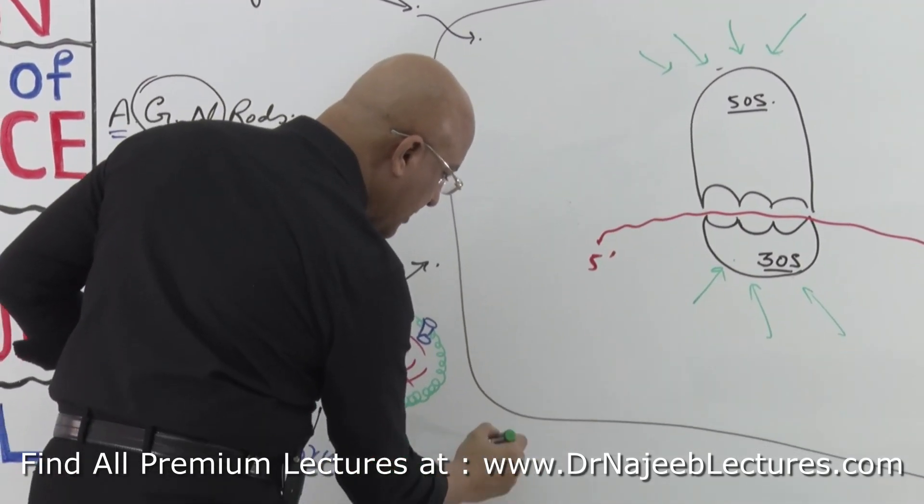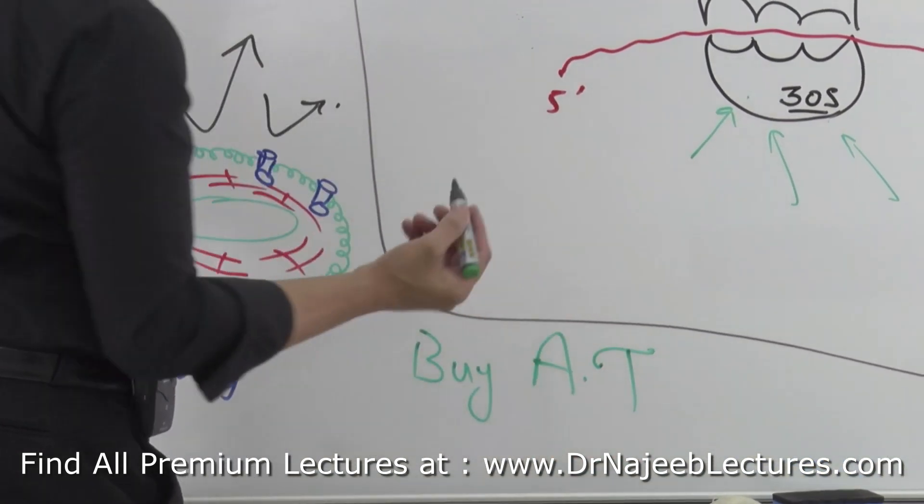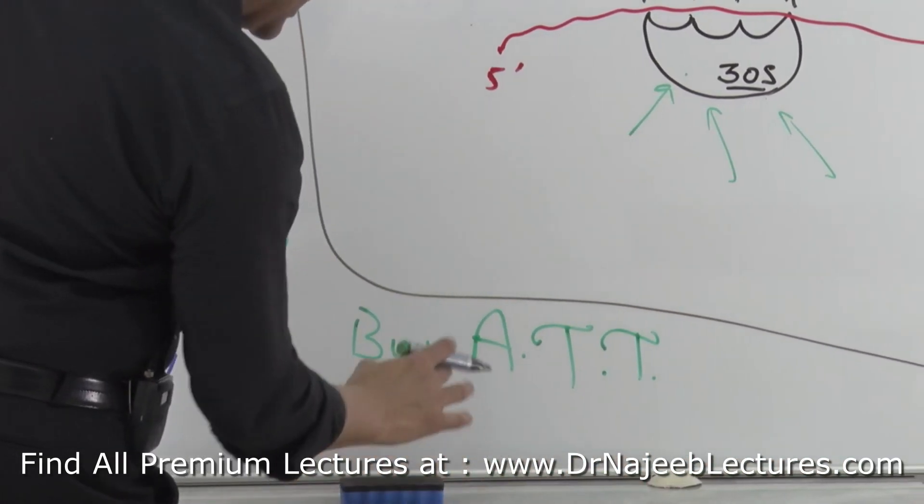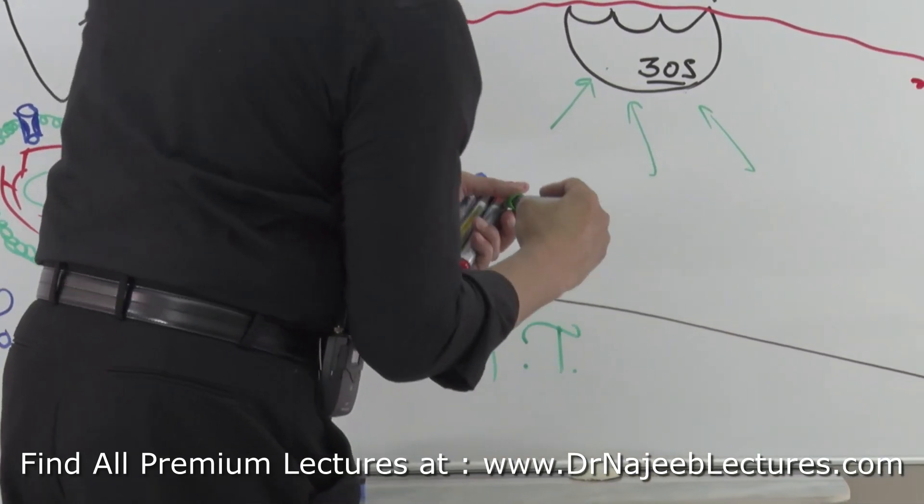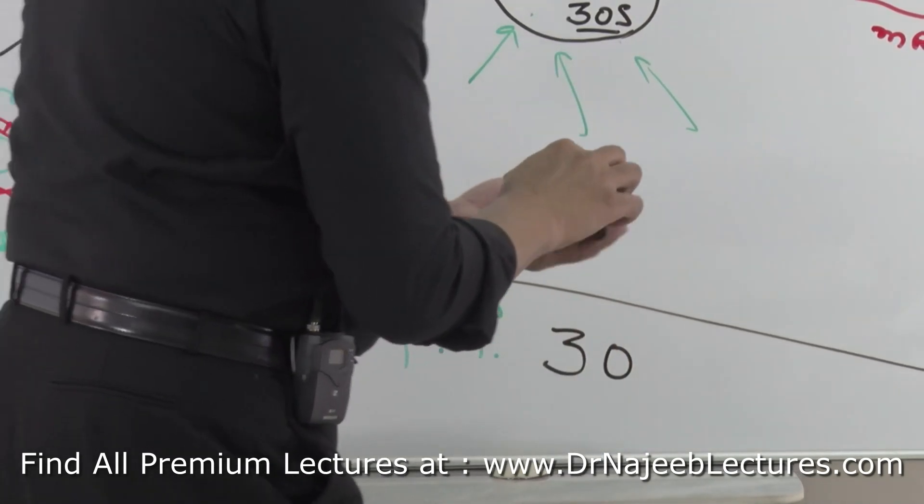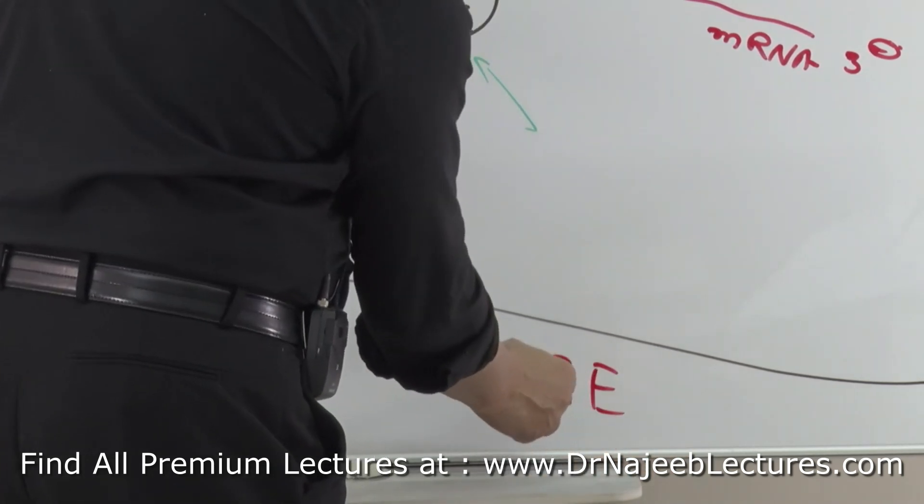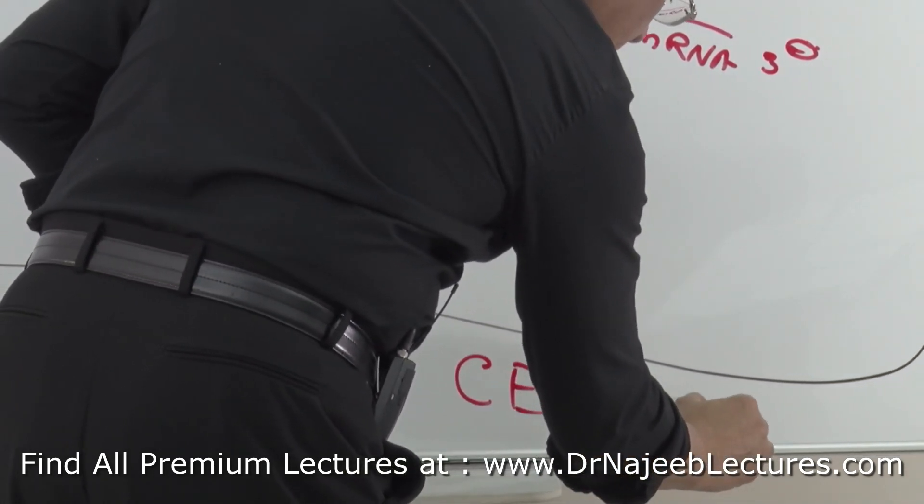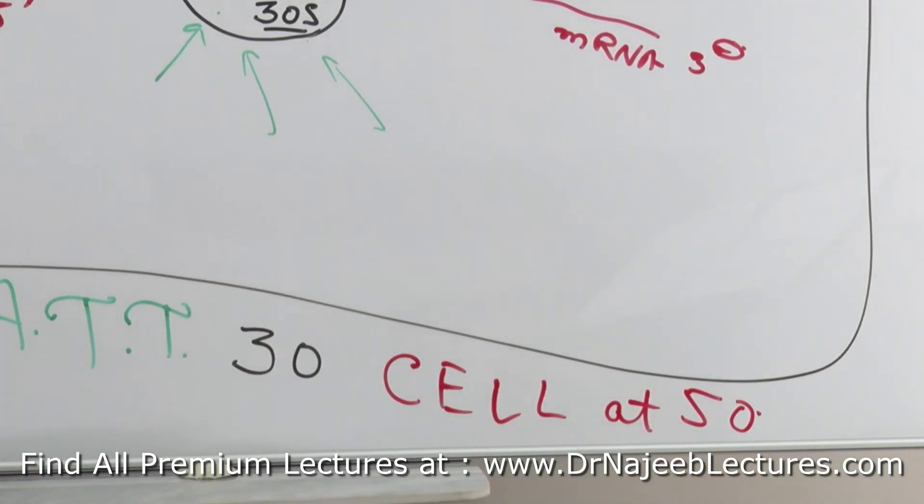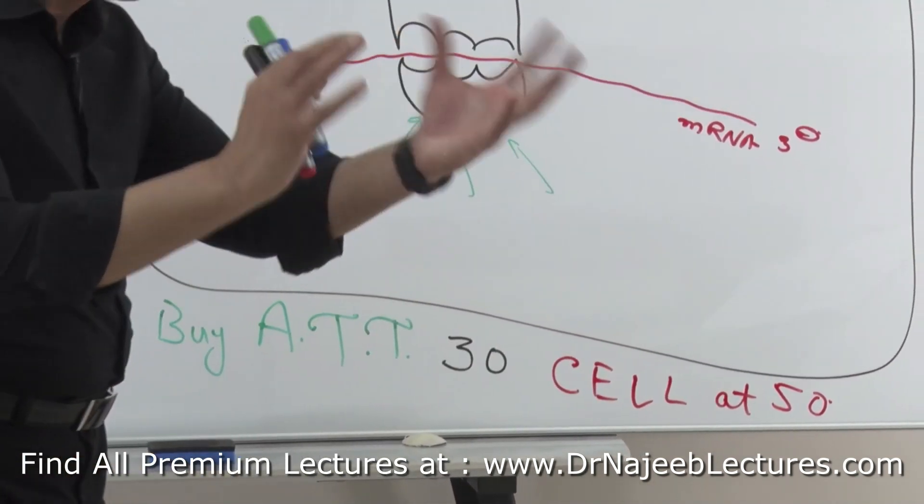The best way to remember is: Buy AT 30 - AT is classically 80, but now one T more is added, I will tell you why. Buy at 30, and if you are a good businessman, then you will sell at 50. Sell at - but it is C, not S. Buy at 30 and sell at 50. Let me decode it for you.